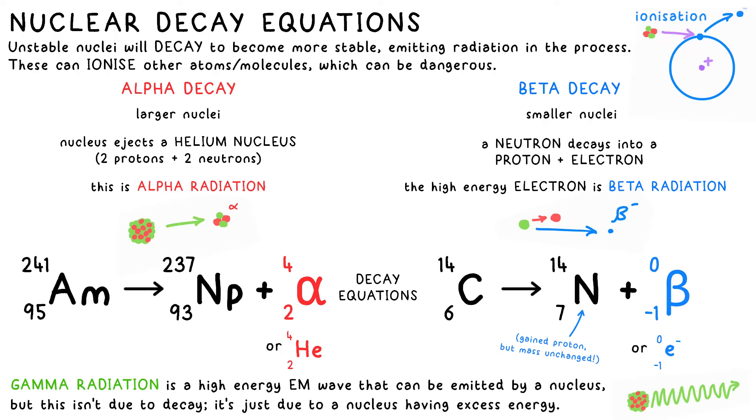The mass of an electron is basically zero, so we put that on top. It has the opposite charge to a proton, so we say it has an atomic number of minus one. Now be careful here. Six goes to what plus minus one? No, it's not five. It's seven. Six is equal to seven plus minus one. Like we said, a neutron has turned into a proton, so the nucleus has gained a proton. It's gone from six to seven. The mass, however, is unchanged, so it's still 14. Once again, AQA would like you to put E for an electron instead of a beta symbol, but they'll allow both.